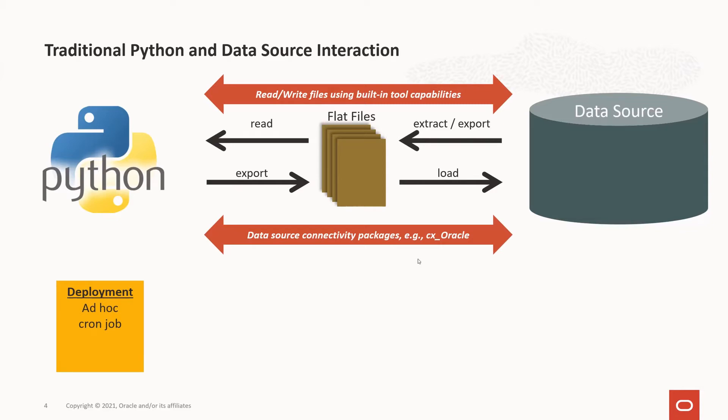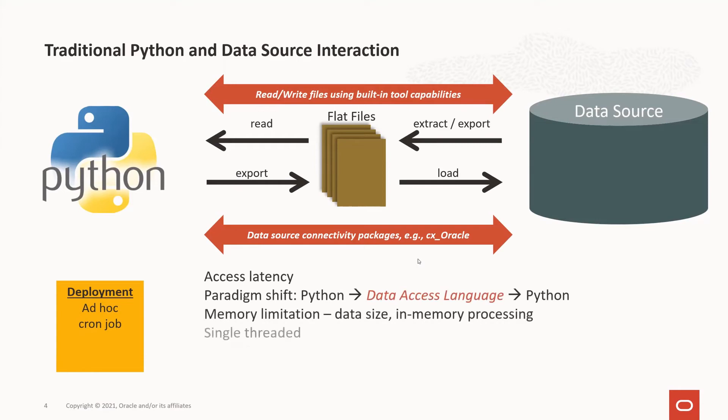However, this data must be pulled from the database each time it's worked on in the Python engine. This introduces data access latency — that is, the time it takes to pull data from a database or from files on disk into the Python engine. It may also require a paradigm shift from using the Python language to using whatever data access language is required by the data source, such as SQL. As an in-memory engine, Python needs to load data into memory before it can process it. If the data doesn't fit in memory, users need to get creative, or sample, or partition the data in such a way that it can be processed, usually in chunks.